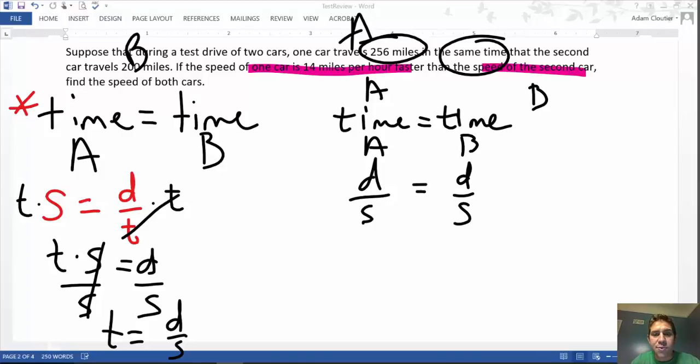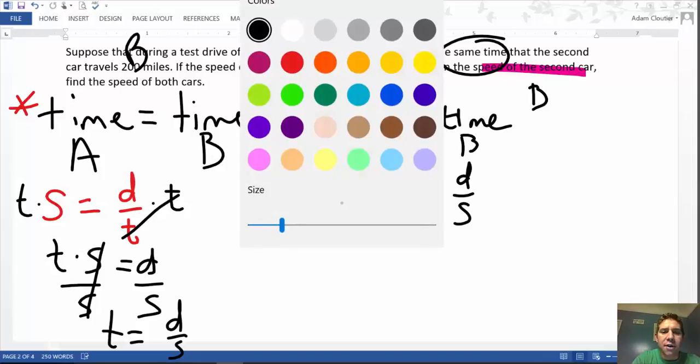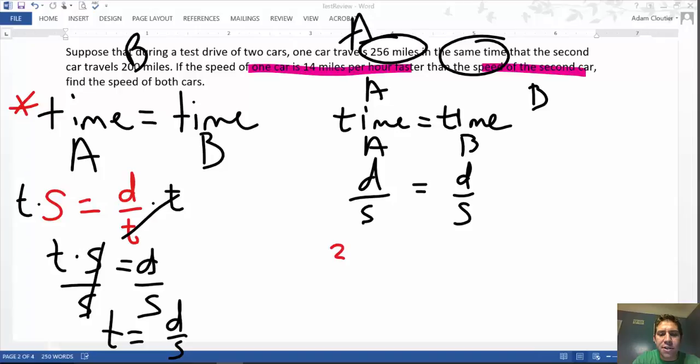So what was the distance? What was the distance that car A traveled? Car A traveled 256 miles. What was the distance that car B traveled? 200 miles.